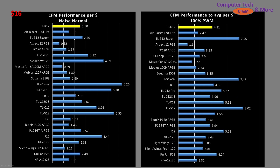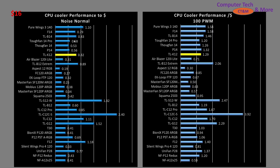For CFM—noise-normalized and at 100%—the TLK12 ranks a bit higher, though still not at the very top. Through the CPU air cooler, it starts to differentiate itself more, though it's still a far cry from the top Thermalright fans like the TL-C12C, TL-G12, and TL-S12. Thermalright makes good cheap fans.